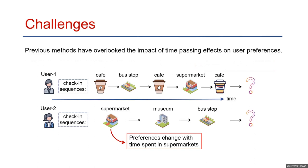In addition, while current methods have focused on capturing users' dynamic preferences, they all ignore the effect of the passage of time. For example, user2's interest in a supermarket might decrease as their wait time increases.